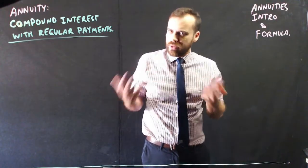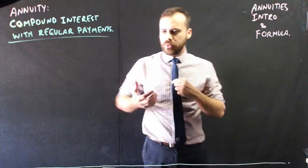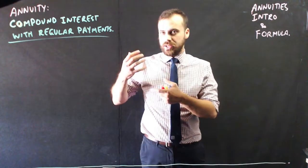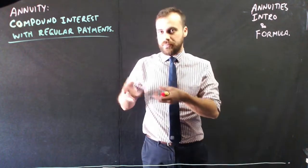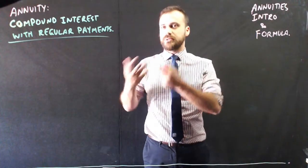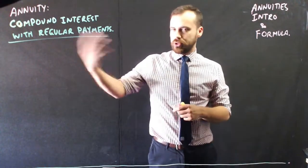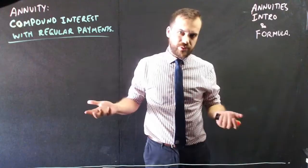But a more normal thing for a person to do would be to put some money in the bank, and then every month when they get paid, put some more money in the bank, like a savings plan. An annuity is like that, it's a savings plan.